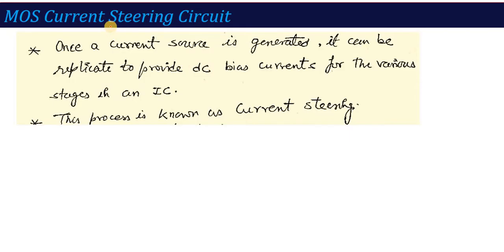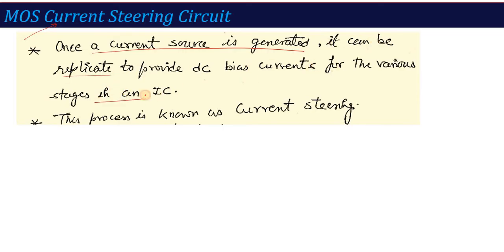First, we are going to talk about the MOS current steering circuit. We have read what a current mirror or current source is. Once a current source is generated, it can be replicated to provide DC bias current for various stages in an IC.